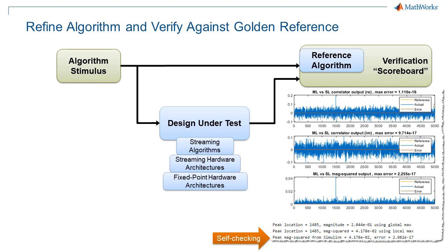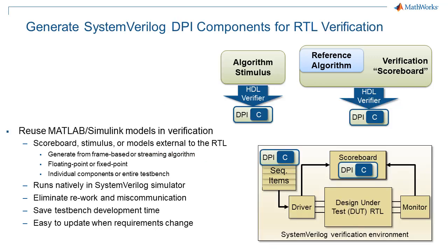Notice we've also added some self-checking capability. This will allow us to run simulations in batch and easily check the results. At this point, you can actually generate components to jumpstart the RTL verification process. Remember how much of the schedule is consumed by verification? Helping this process along by automatically generating tests and golden reference models helps them get started much earlier, not having to develop and debug their own versions.